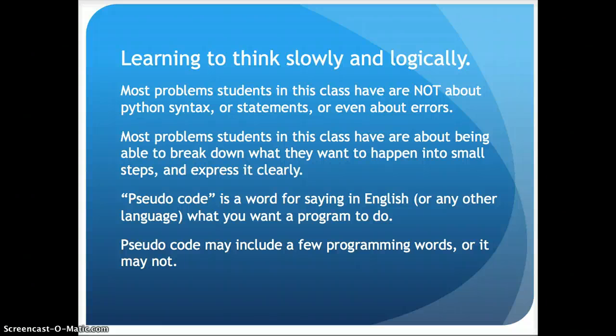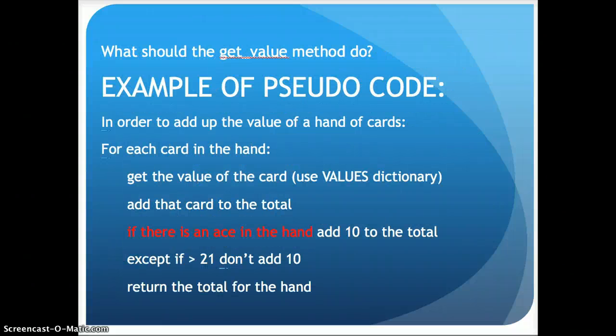Let's talk about thinking slowly and logically. One of the main things we have to learn in programming is to tell the program exactly what to do in these tiny, minute parts. Most of the problems students have are not about Python syntax or error messages — they're about being able to break down what you want to happen into small steps and express it clearly. Pseudocode means saying in English what you want a program to do, and it can include a few programming words or may not.